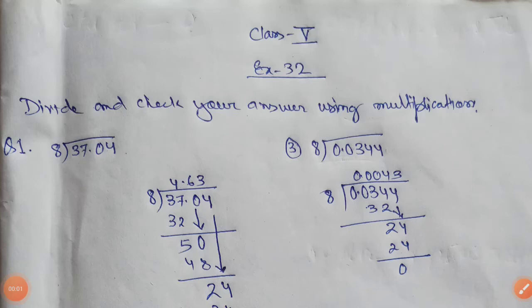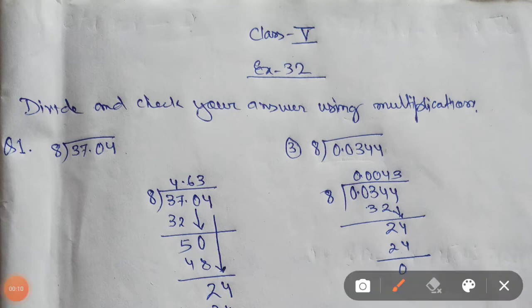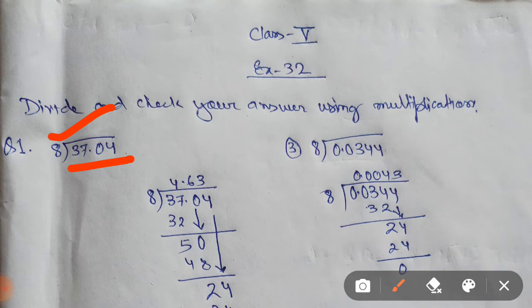Hello students. Today we will start our exercise 32 of the lesson decimal. So let us try to do some questions here. In the first question we have to divide 37.04 by 8. So what will you do here?